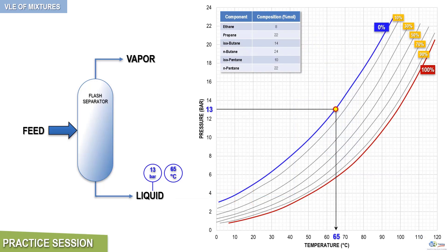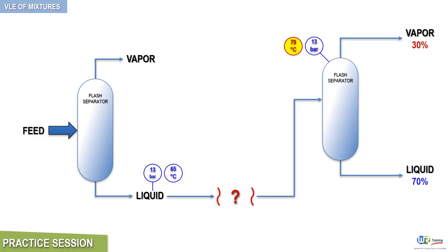Referring back to the vapor-liquid equilibrium diagram, the operating point of the second flash separator is given by the intersection of the horizontal line corresponding to a pressure of 13 bars and the 30% vaporization curve, as depicted here. As a result, the operating temperature of the second flash separator is 79 degrees Celsius. In other words, the second flash separator should be operated at 13 bars and 79 degrees Celsius in order to recover 30% vapor overhead.